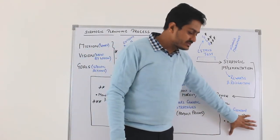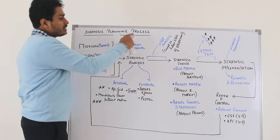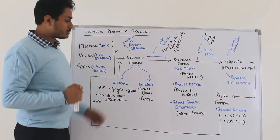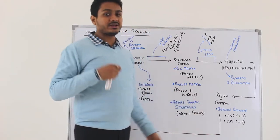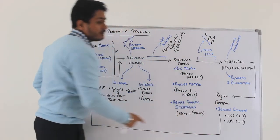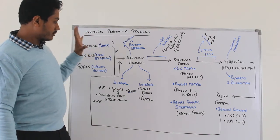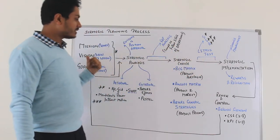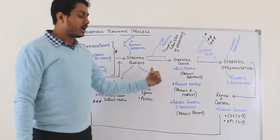Whatever is the outcome of review and control feeds back into strategy — back to the strategic analysis stage. The strategic planning process is an ongoing process; it is not a one-time job. You prepare a framework, do analysis, make choices, implement, and continue to review. If you achieve a particular target, you increase your target. The ultimate goal is to achieve your mission statement, which is forever, so the strategic planning process is done on an ongoing basis. These are, at a high level, the key elements of the strategic planning process.